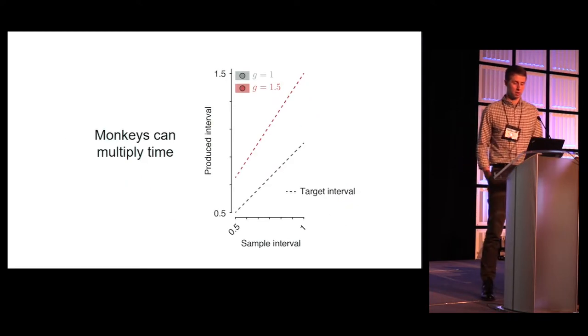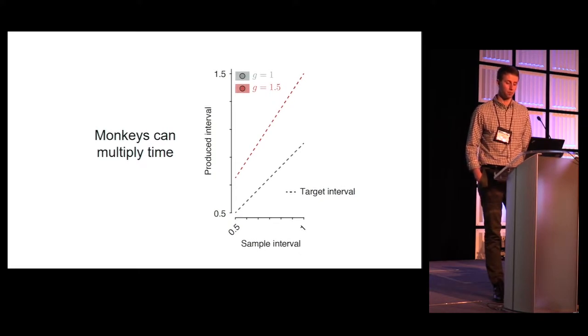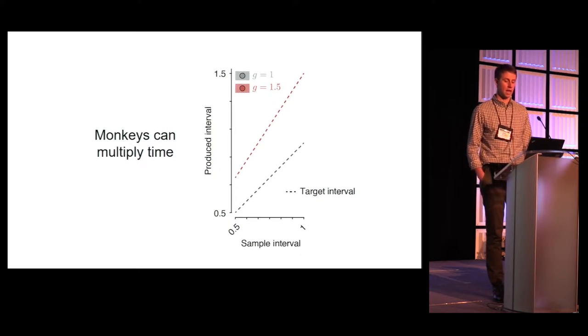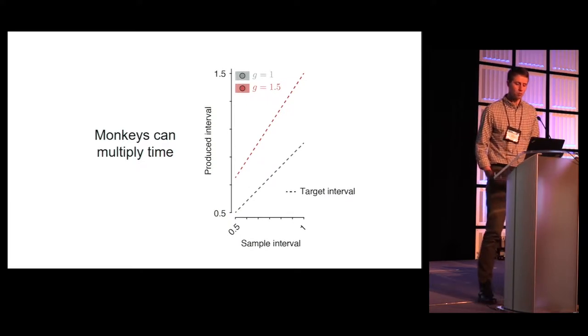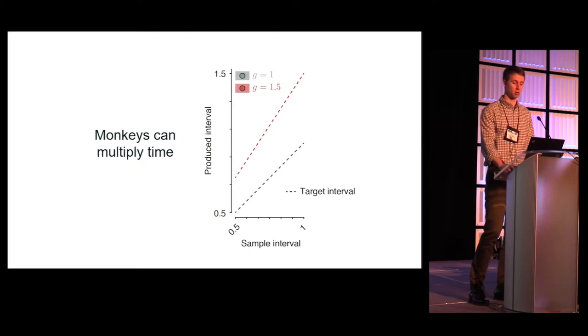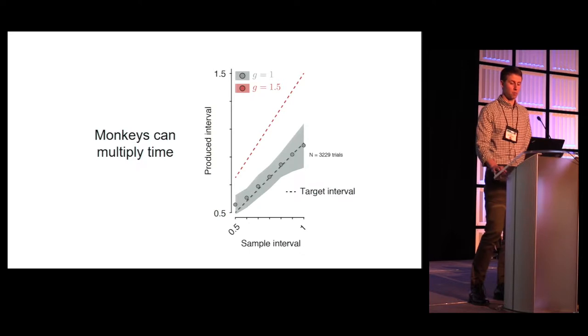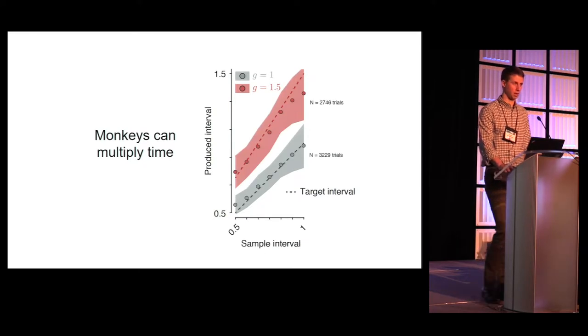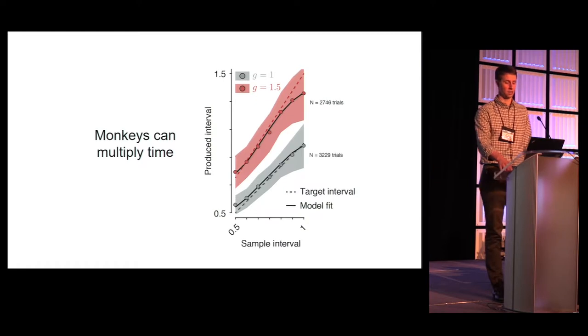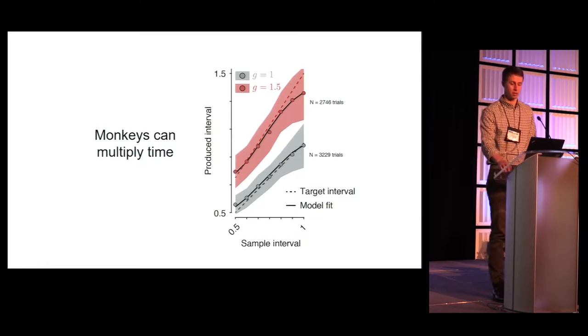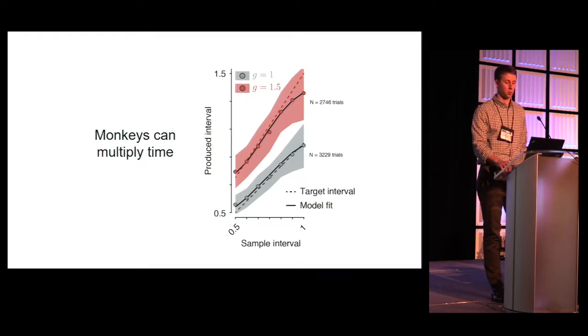We trained two monkeys to perform this task, registering go responses with a saccade to a visual target. Ready and set cues were flashed visual stimuli and the context was given by a persistent fixation cue. Here I've illustrated the target interval versus the sample interval for the two contexts using dashed lines. Here I'm plotting the mean plus and minus one standard deviation for several experimental sessions for the gain of one. And here's the data for the gain of 1.5. Finally, the solid lines indicate the fits of a Bayesian observer model to each context. I'd like to bring your attention to two key features of the data. First, the average produced interval increases with the sample interval. Second, the slope of the relationship between the target interval and the produced interval increases between the gain of 1 and 1.5 contexts, indicating that monkeys learned to measure and flexibly produce timed actions according to the rules of the task.